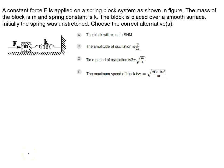A constant force F is applied on a spring block system as shown in the diagram. The mass of the block is M and spring constant is K. The block is placed over a smooth surface. Initially, the spring was unstressed. We have to choose the correct alternatives.